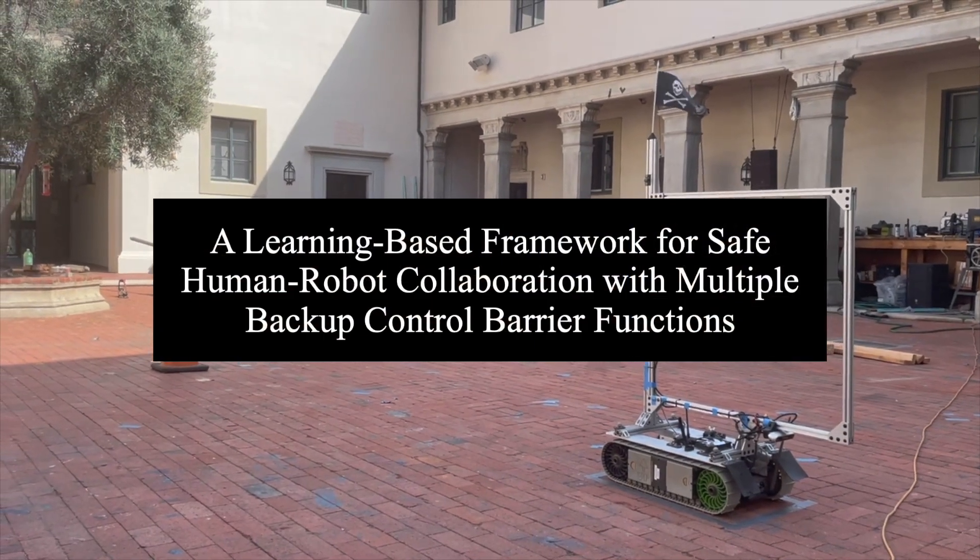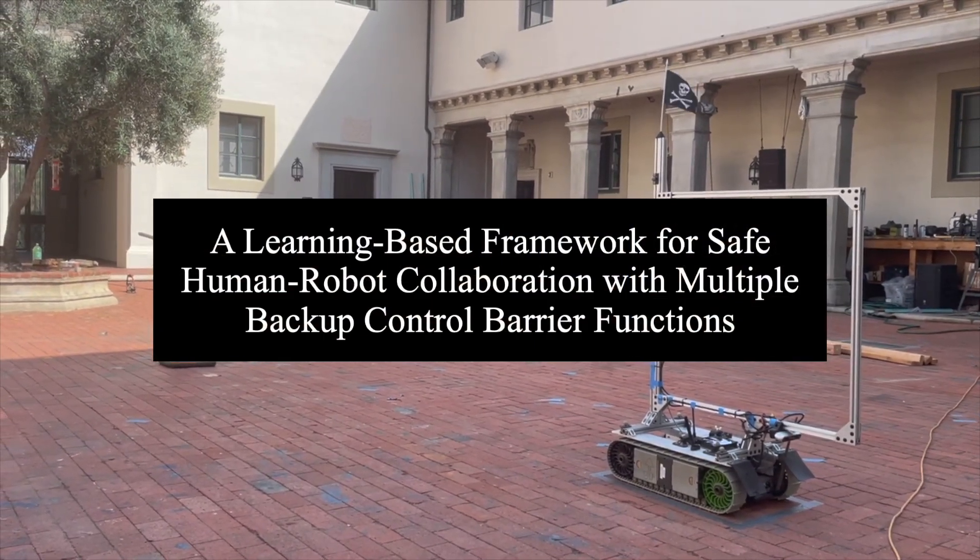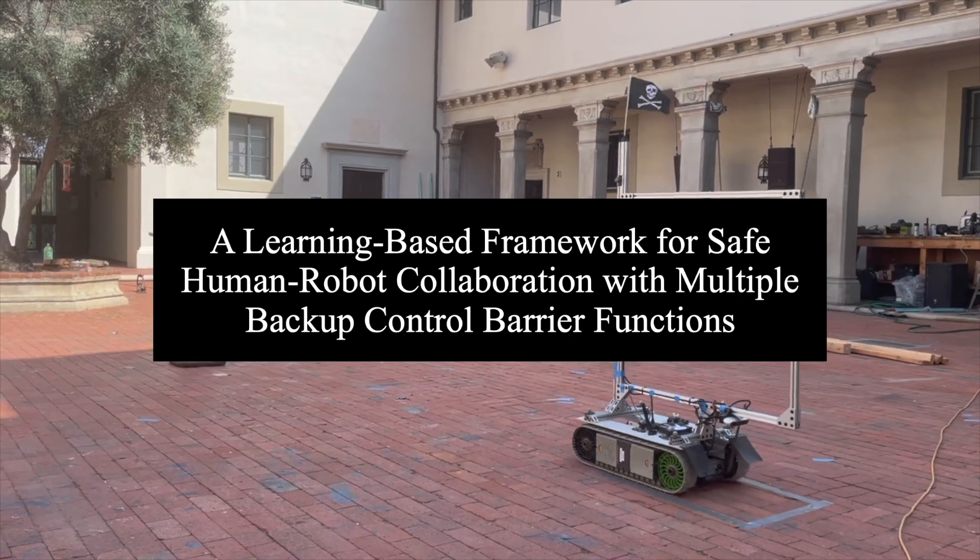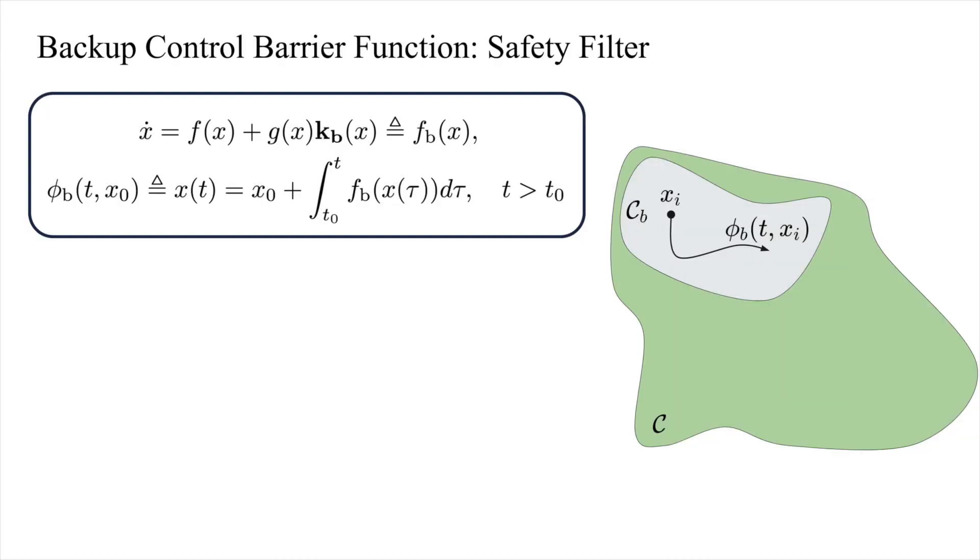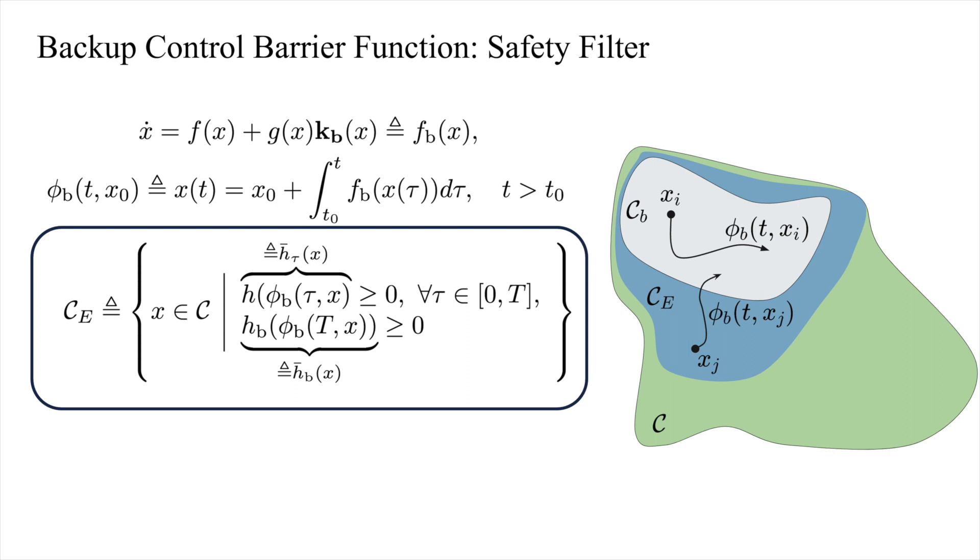This work presents a learning-based framework for safe human-robot collaboration with multiple backup control barrier functions. We use the backup control barrier function method for safety critical control, which considers control limits and safety constraints by constructing a control invariant set in a quadratic program.